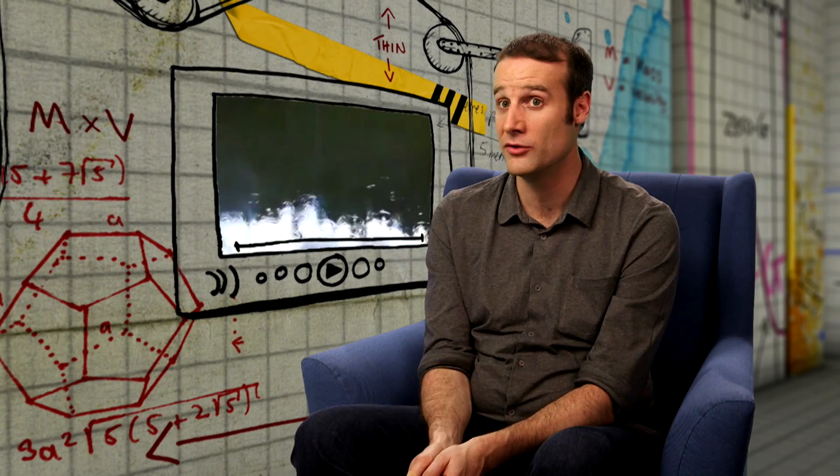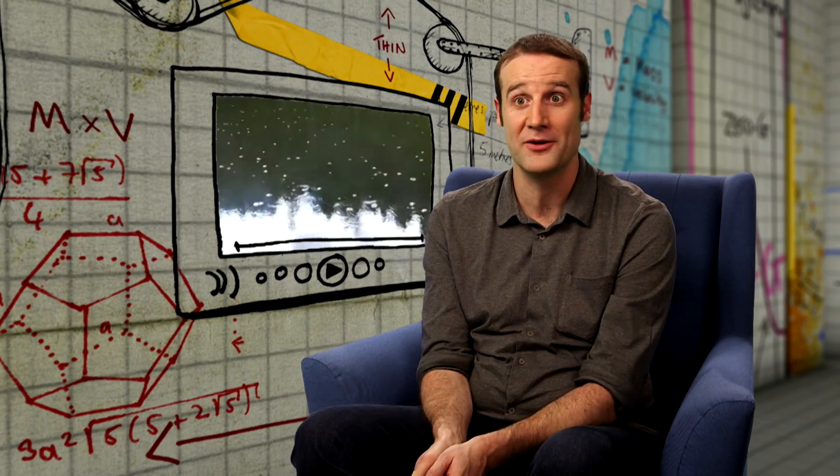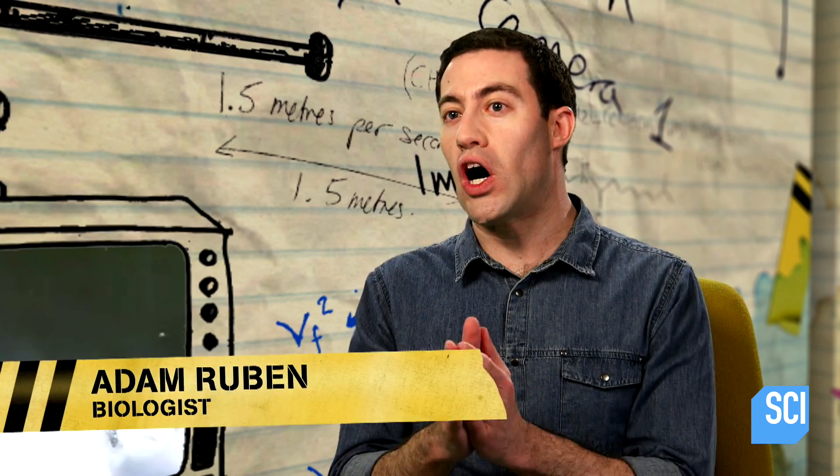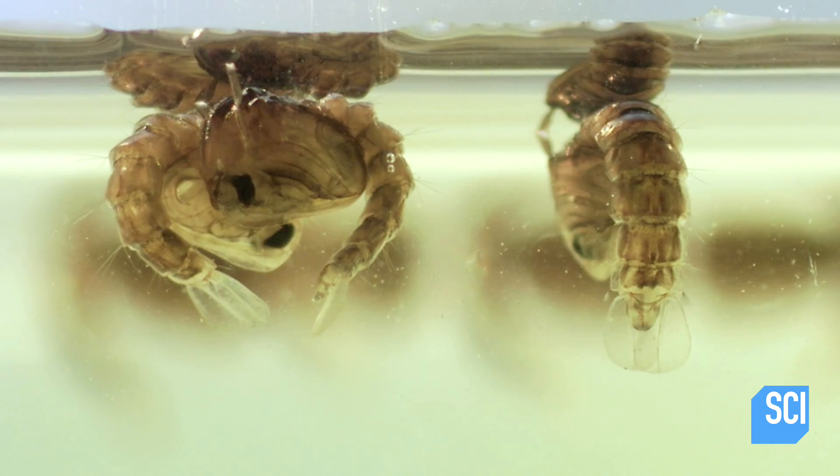The ability to ripple water with the power of your voice is the worst superhero power ever. So how is Tony creating these watery ripples? It's not Tony's voice that's causing the ripples — it's hundreds of baby mosquitoes.